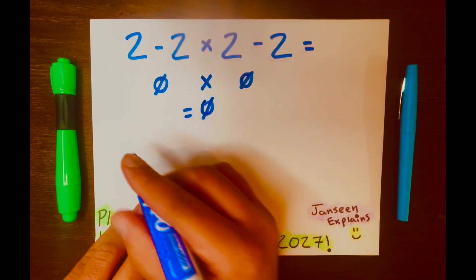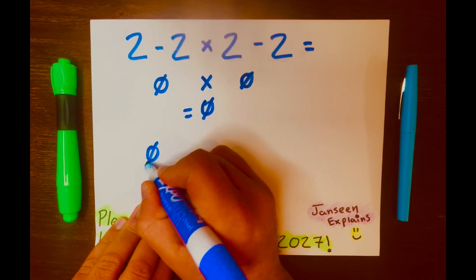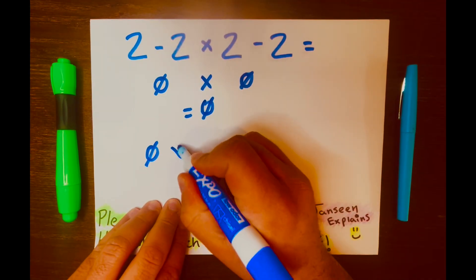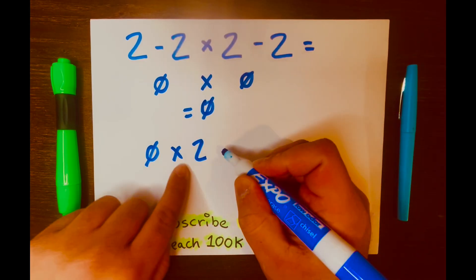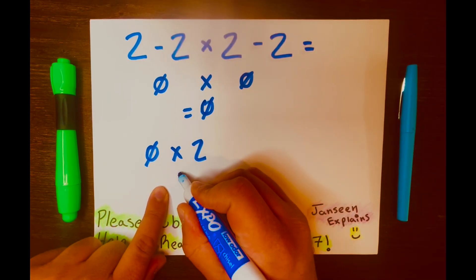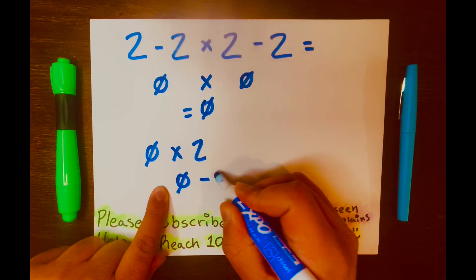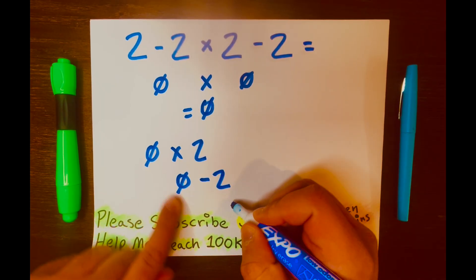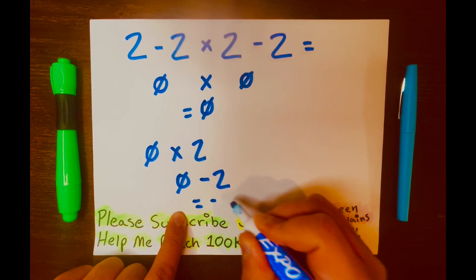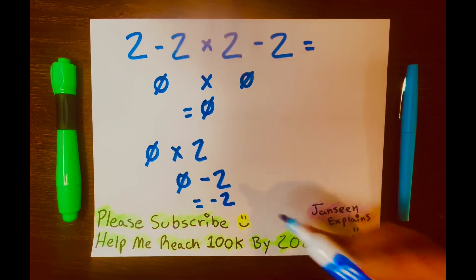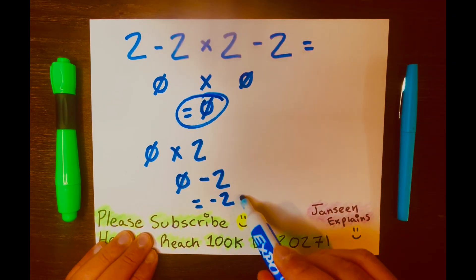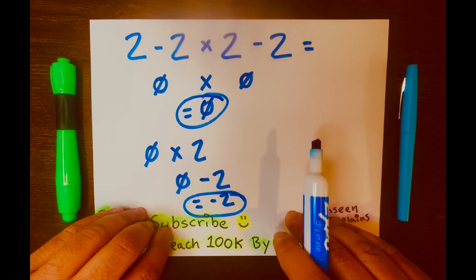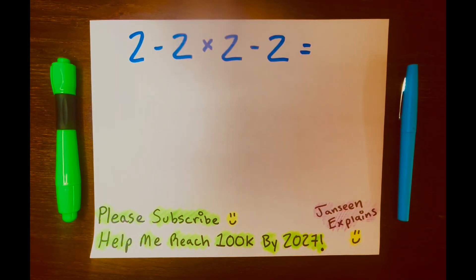2 minus 2 is 0, times 2 is 0, minus 2 equals negative 2. And this is wrong, and this is wrong. Let me show you how to solve this math problem correctly.